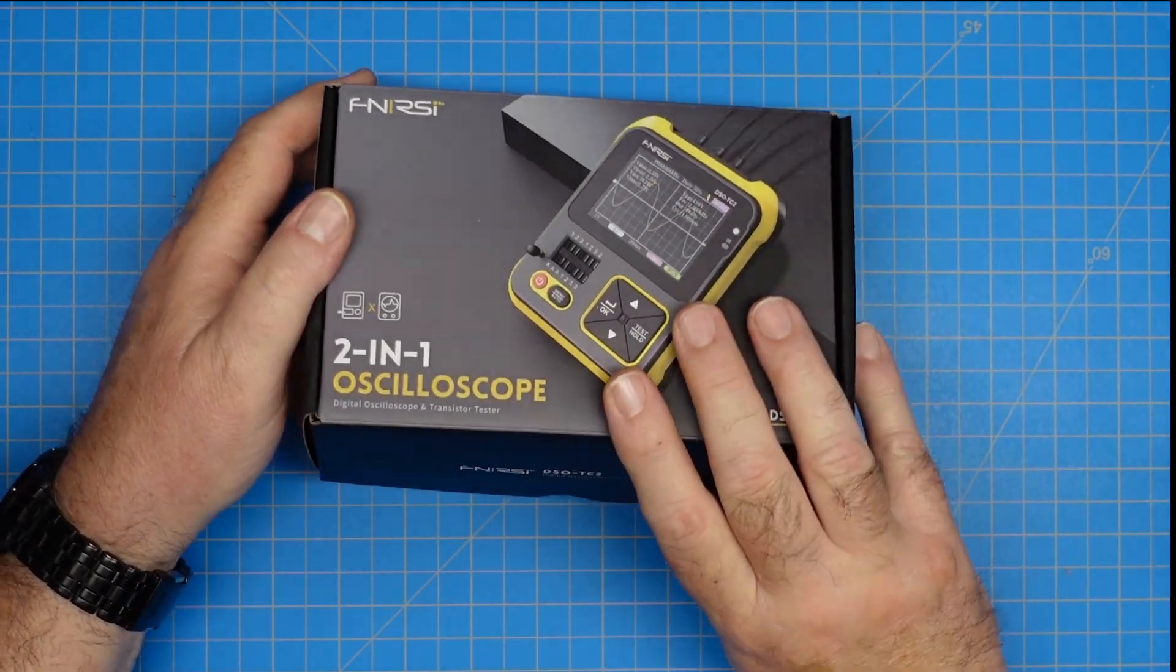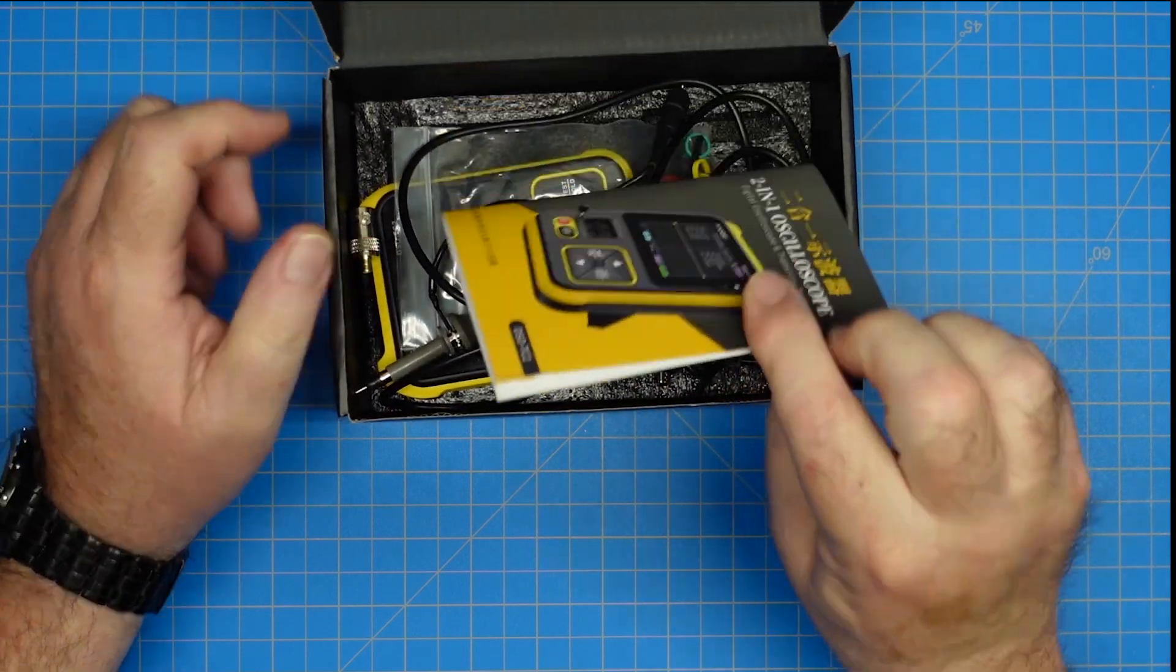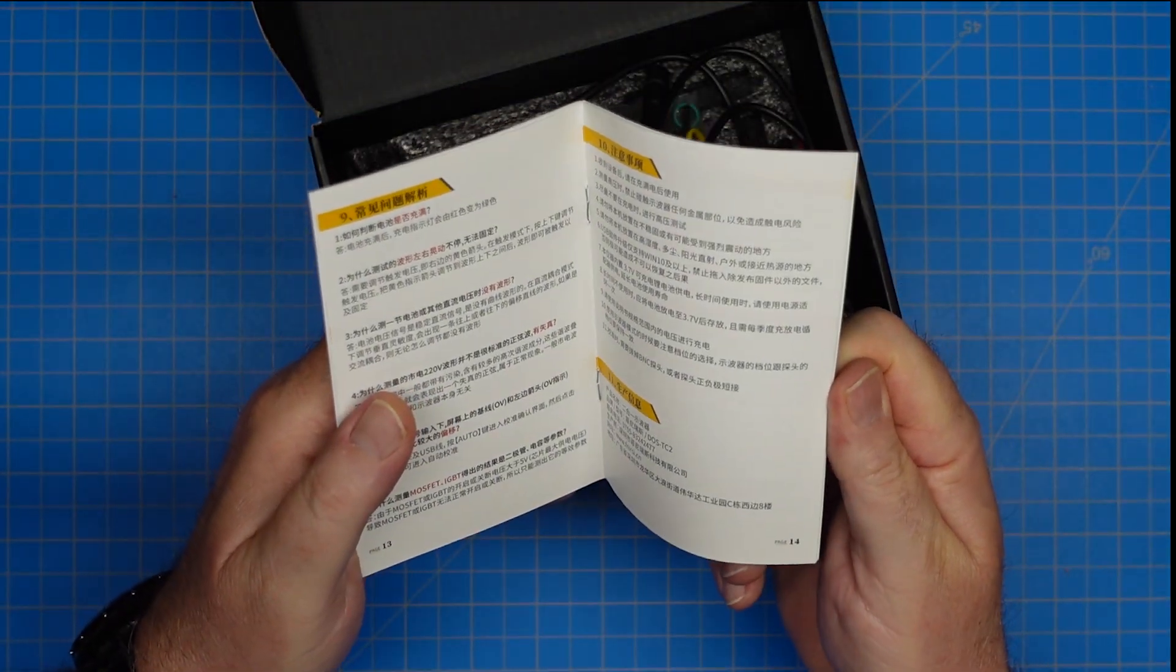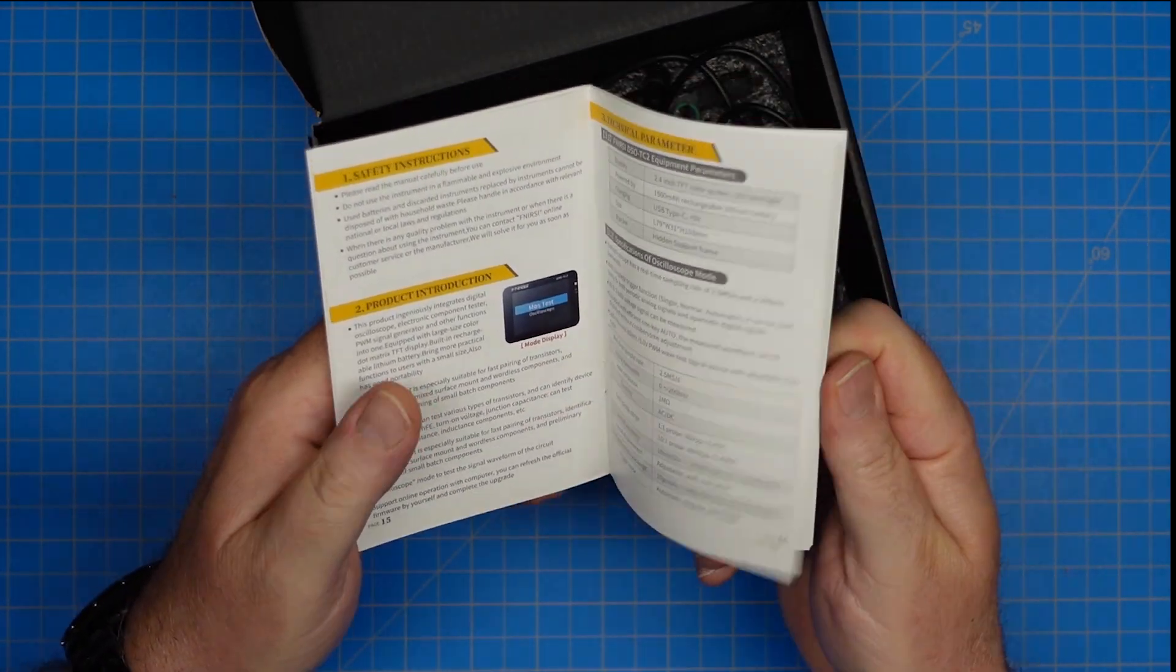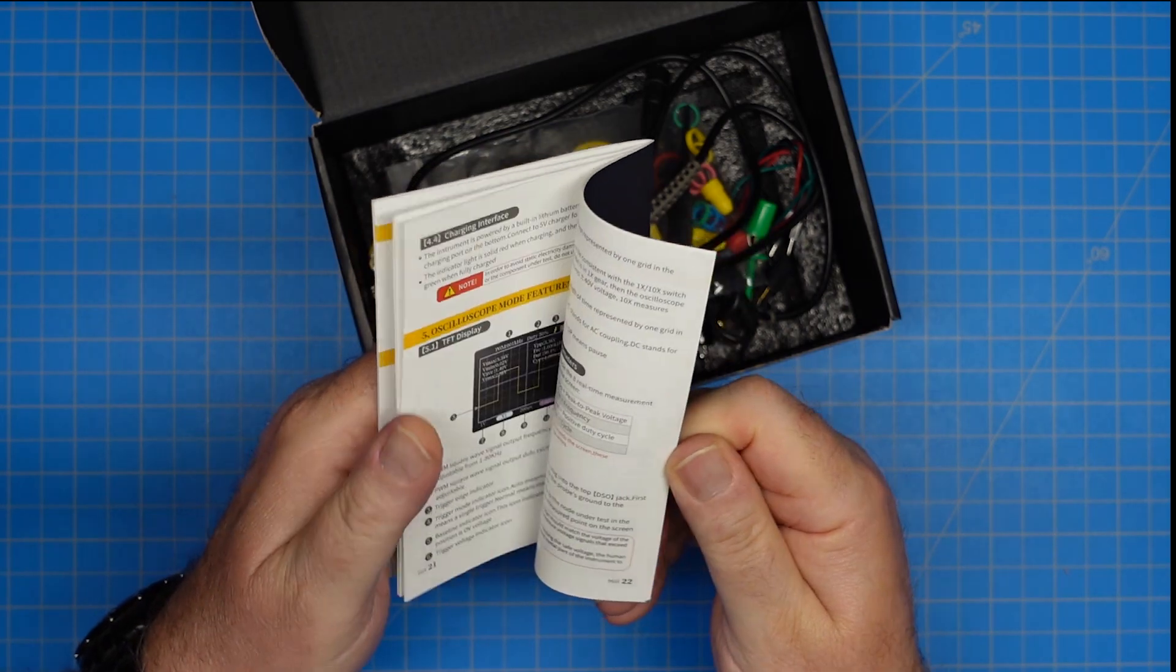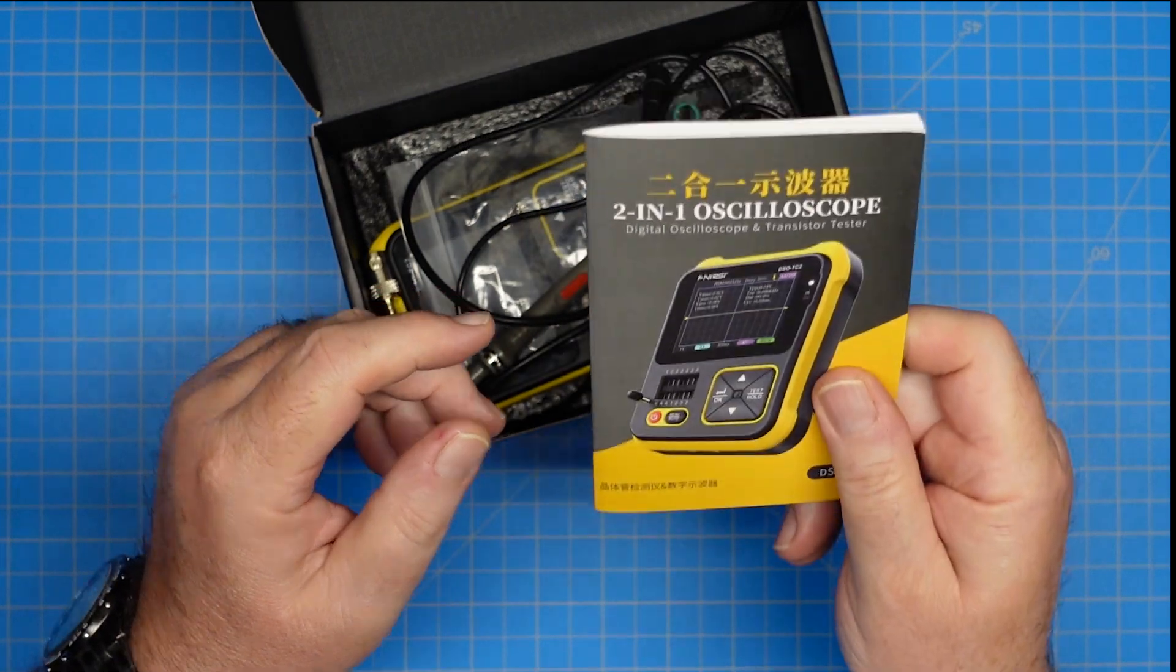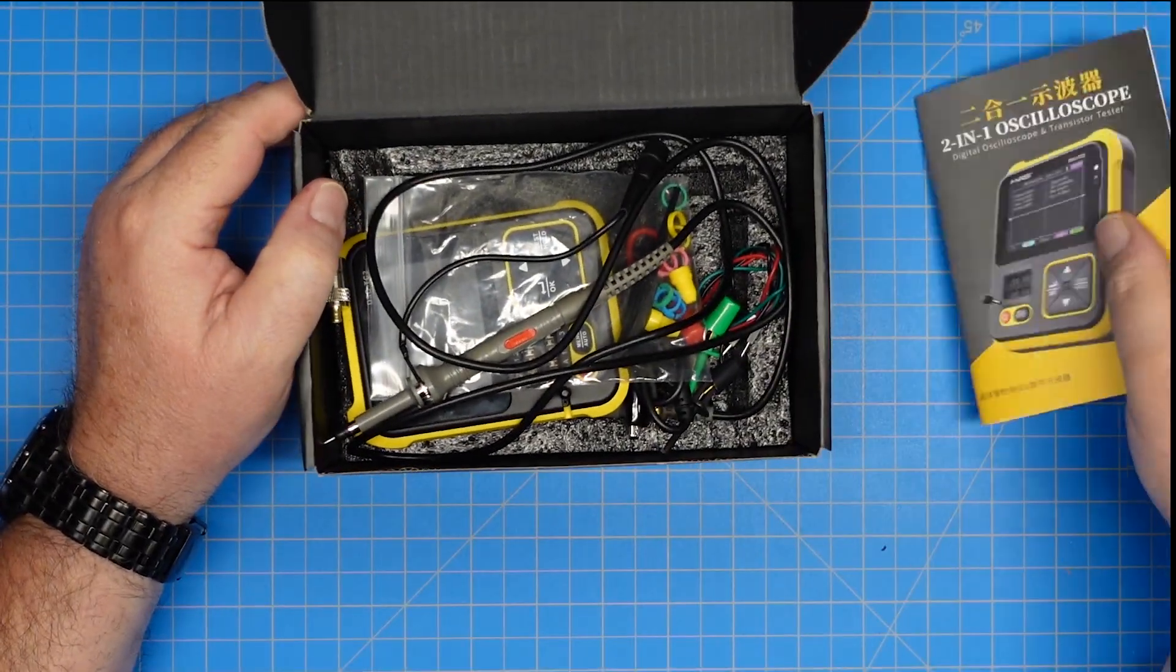So that's what it says it does. This was, again, $50. I've already had this open, but let's go through what's in the box fairly quickly. We have a manual. Half of this is in Chinese, and the other half is in English, and I have to say, this is a fairly well put together manual, and it's high quality.